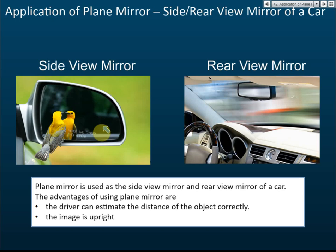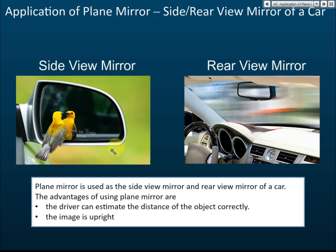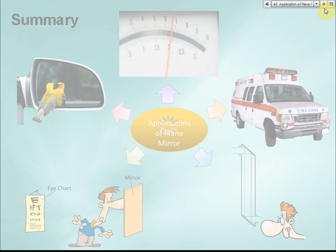Second, plain mirrors produce an upright image, so what you see in the mirror is not inverted. A concave mirror could produce an inverted image, which is why concave mirrors are not used as side-view mirrors. Sometimes a small convex mirror is added to the side-view mirror, but concave mirrors are not used.